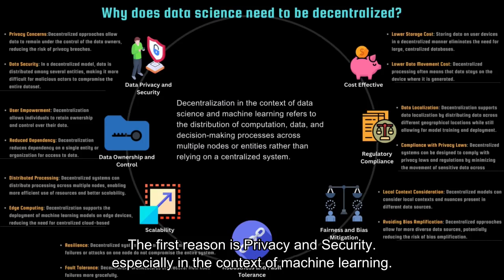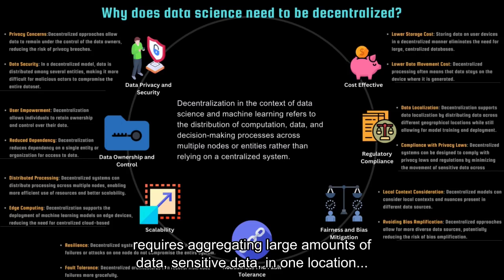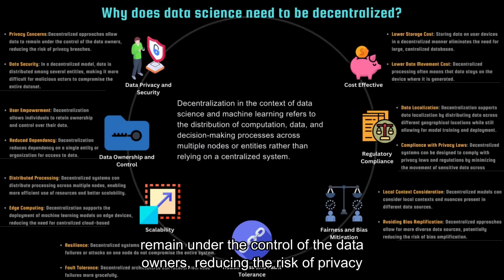The first reason is privacy and security. Centralized models often require aggregating large amounts of sensitive data in one location, raising privacy concerns. Whereas, decentralized approaches allow data to remain under the control of the data owners, reducing the risk of privacy breaches.